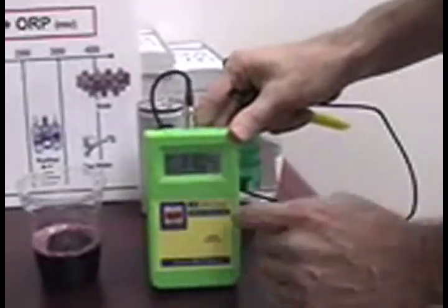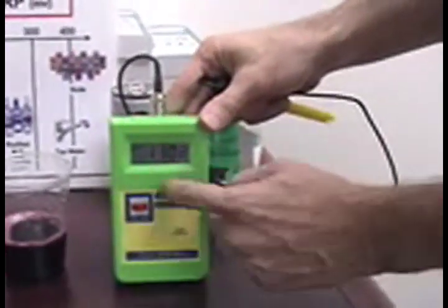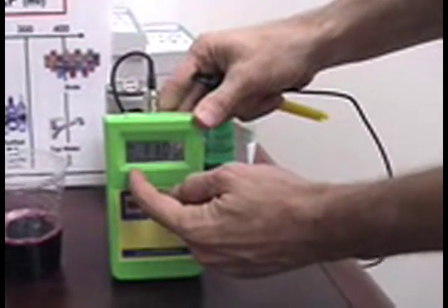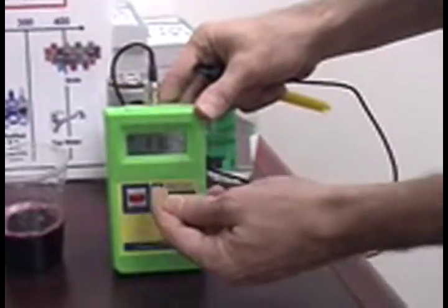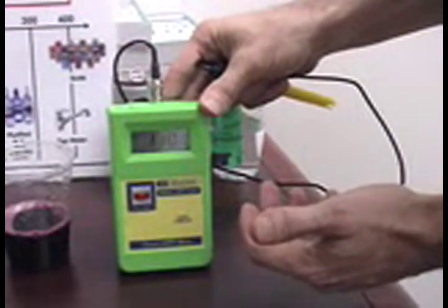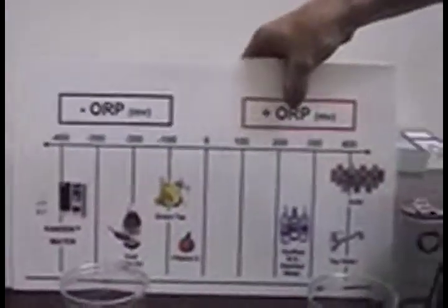So the first test that we're going to do is the antioxidant test. On this device, it's called an Oxidation Reduction Potential Meter. There will be a number with a lack of a sign, positive or negative, means it's positive. If there's a negative sign, that means that it's a negative number, which means positive ORP is the presence of free radicals. Negative ORP, Oxidation Reduction Potential, is the presence of antioxidants.